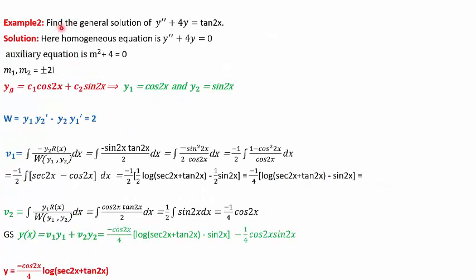In the second example, the differential equation is y'' + 4y = tan(2x). The right-hand side is neither sin(x), cos(x), exponential, nor a polynomial — but we can still solve it using this method. The homogeneous equation is y'' + 4y = 0, giving auxiliary equation m² + 4 = 0, so the roots are ±2i. The general solution is c1·cos(2x) + c2·sin(2x), where y1 = cos(2x) and y2 = sin(2x). The Wronskian comes out to be 2.